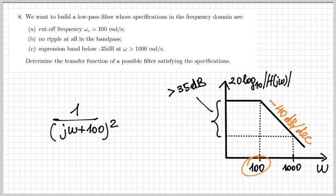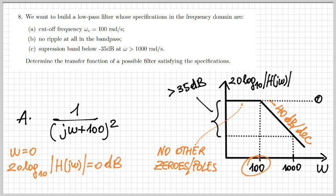It's 100 because of the cutoff frequency, and it's a square term, second order, because what we want to kick in at ω equal 100 is a slope of minus 40 dB per decade. We also have no other zeros or poles because we want the response to have no ripple in the band pass. So we need to determine a multiplying coefficient A.